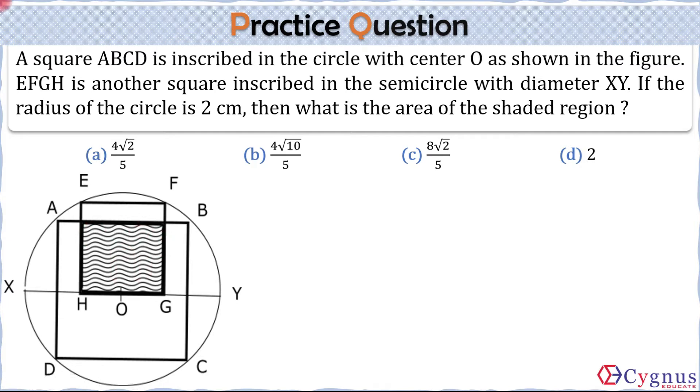So let's say the side of the biggest square is capital A and side of the smallest square is small a. So area of the shaded region, how can we calculate? Area of the shaded region will be HG into this length. This length will be same as half of the side of the bigger square. So this becomes a into capital A by 2. This is the area that we have to calculate. So what basically we have to calculate is we have to calculate the sides of these two squares. So let's first look at the bigger square ABCD.